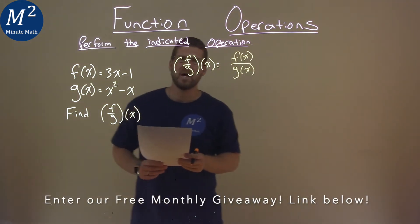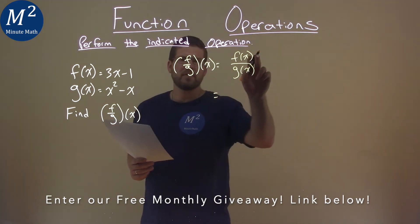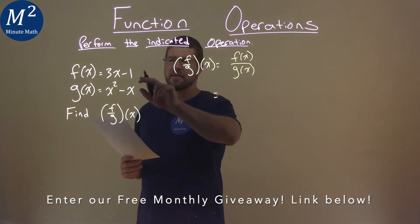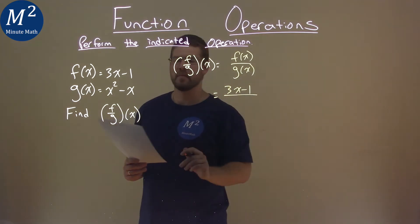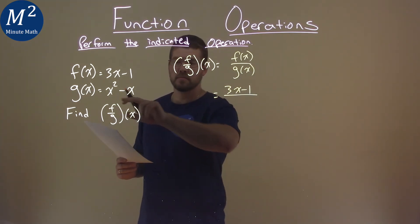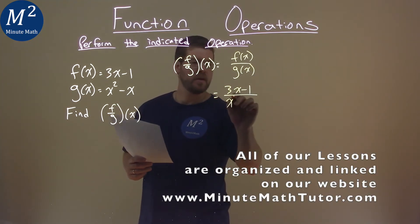Alright? And so, we substitute now. What's f of x? They tell us it's 3x minus 1. And what's g of x now? x squared minus x. Not too bad.